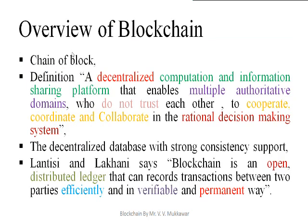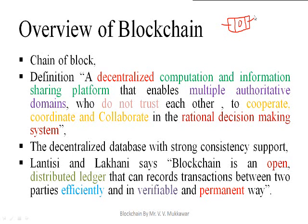The simple definition for blockchain is nothing but a chain of blocks. As computer science students, we know what a linked list is. In a linked list, we have a data structure that has the address of a previous node — two fields for the address and one field for the data. Likewise, inside a blockchain we have a chain of blocks connected by means of addresses.